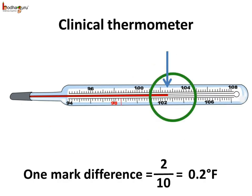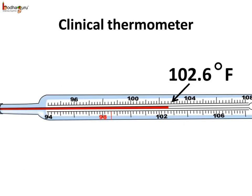How do we read the temperature? The mercury thread has crossed 102 and has stopped at the third mark after it. If we see the marking, after 102, the next marking is 104 degrees. So 2 degrees is divided into 10 parts. Thus, each part is 2 divided by 10, which is equal to 0.2 degree Fahrenheit. And thus, the third mark means 0.2 multiplied by 3, which is 0.6. So the temperature is 102 degrees plus 0.6 degrees, which is 102.6 degree Fahrenheit.